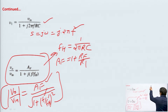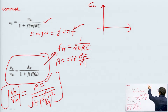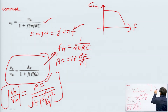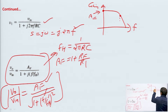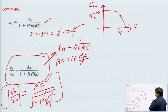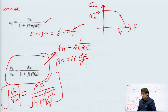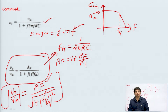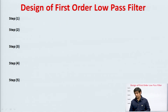When we draw the frequency response of this first order low pass filter — gain versus frequency — we get Af as the maximum gain and the cutoff frequency is fH. This is the transfer function and voltage gain of the first order low pass filter.